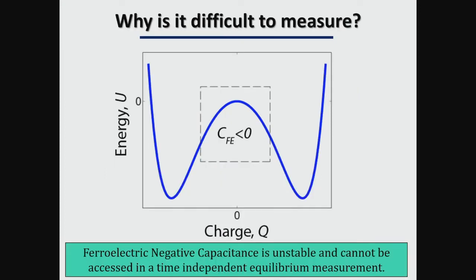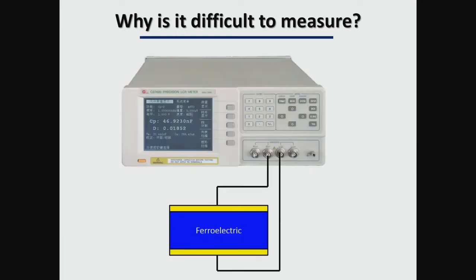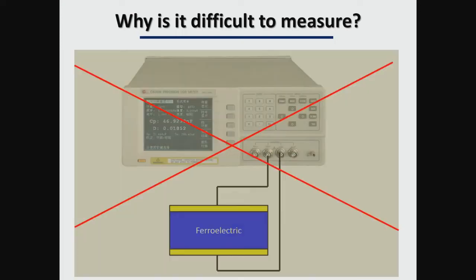Taking a bit of historical perspective: the first ferroelectrics were discovered in the 1920s, but until we reported our results no one had directly measured negative capacitance. The reason is simple — the negative capacitance state is an unstable one. If you place the polarization on top of the energy barrier it will automatically fall down to one of the minima. As a result, if you try to measure negative capacitance by directly connecting to an impedance analyzer, you measure a positive capacitance, not negative capacitance. So how do we measure it?